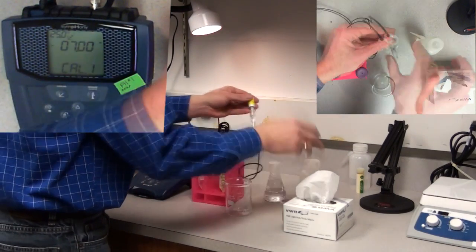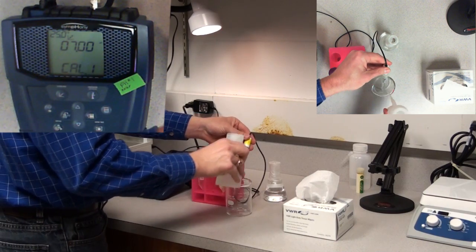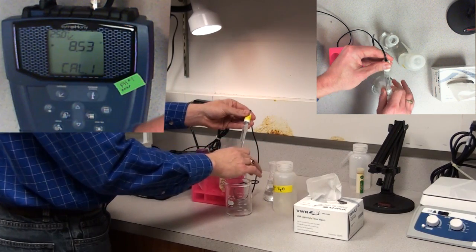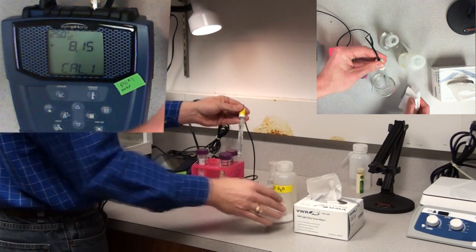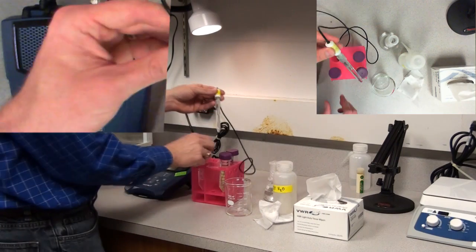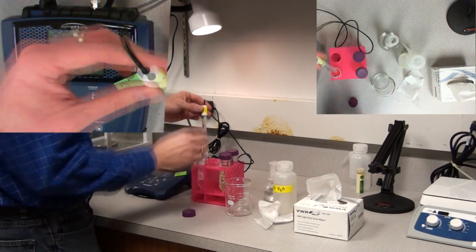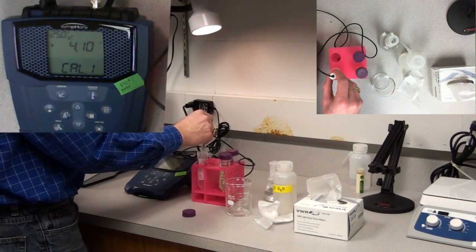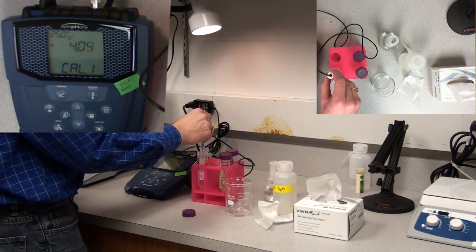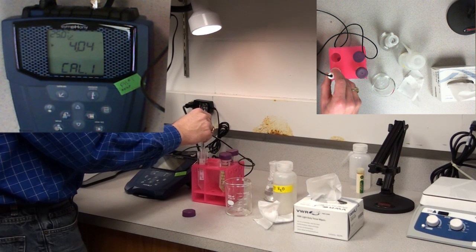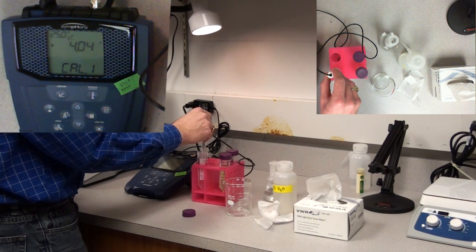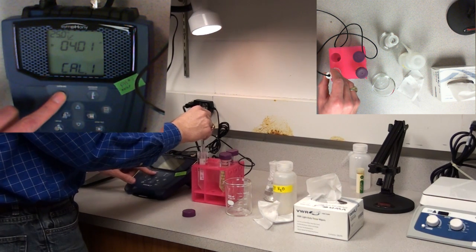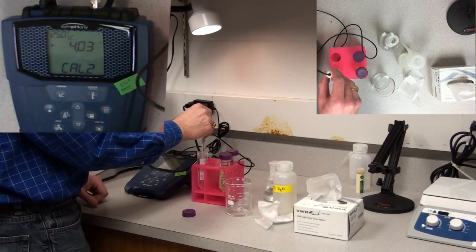So I take out the probe, I'm going to rinse it off. In this particular case, what you're typically supposed to do is rinse the shaft but blot the bottom just in case you have static electricity that can throw off your results. The pH 4 buffer is what I will do first. I will place it in there. It should auto detect it. I will push the calibrate button and now it's ready for my second buffer.